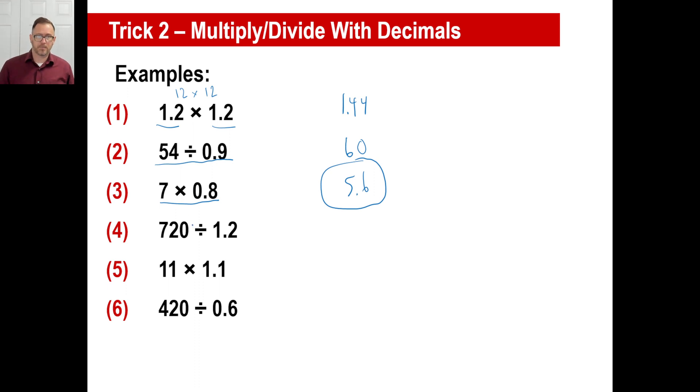This one, hope you're getting faster at these now. Estimate. That's about 700 divided by 1. 700 divided by 1 is about 700, somewhere. Now you ignore the zero, ignore the decimal. What you actually have now is 72 divided by 12. Well, that's going to be 6. We estimated our answer was 700. The answer is going to be 600. That's the closest it will be to 700.